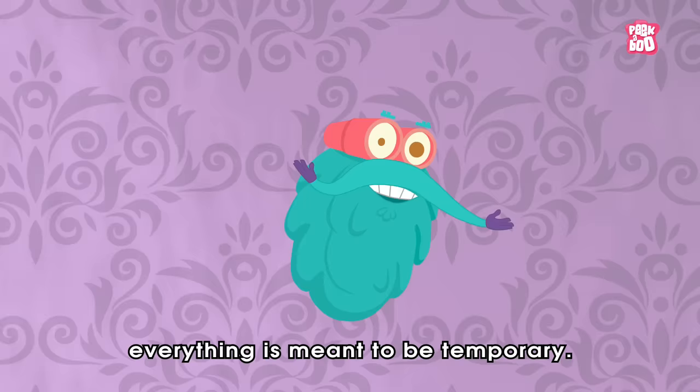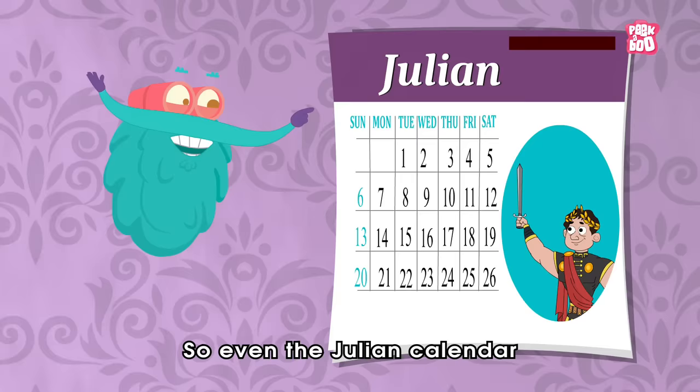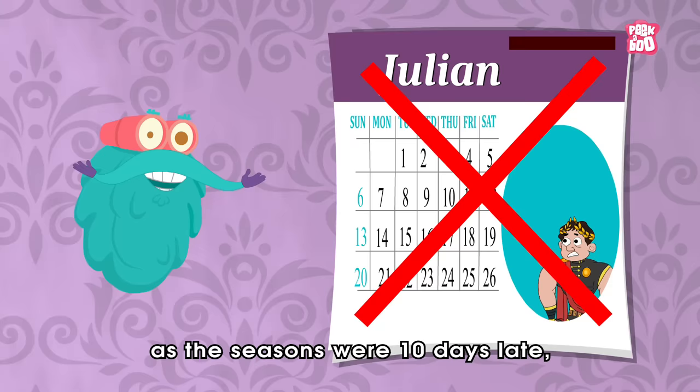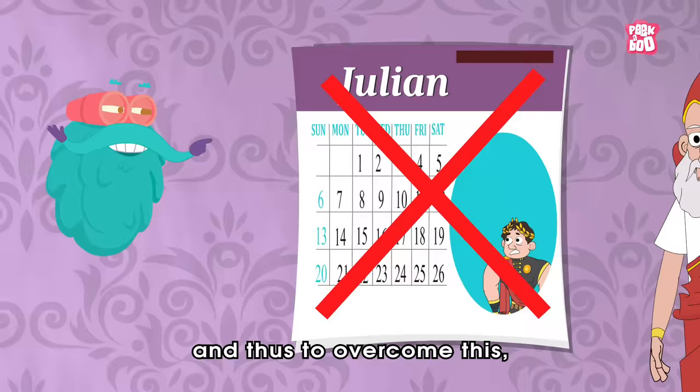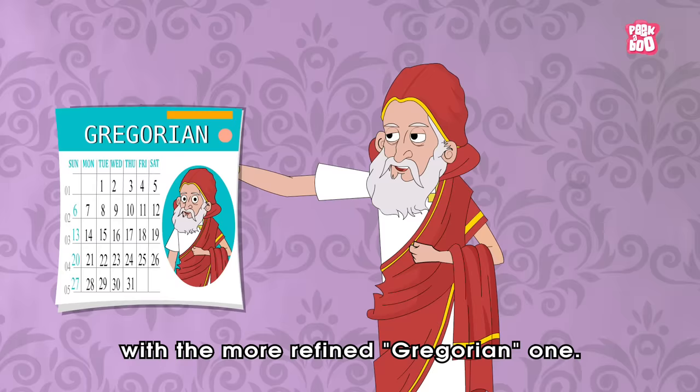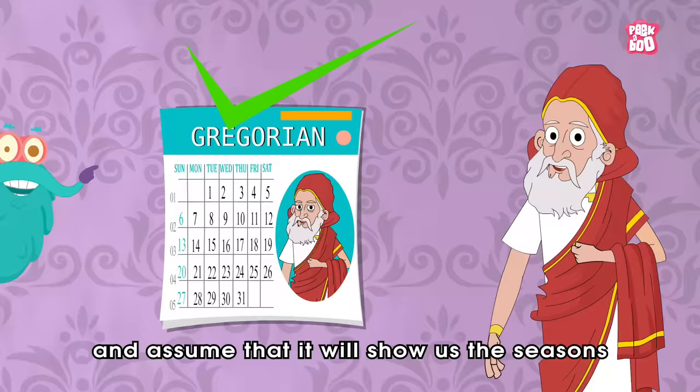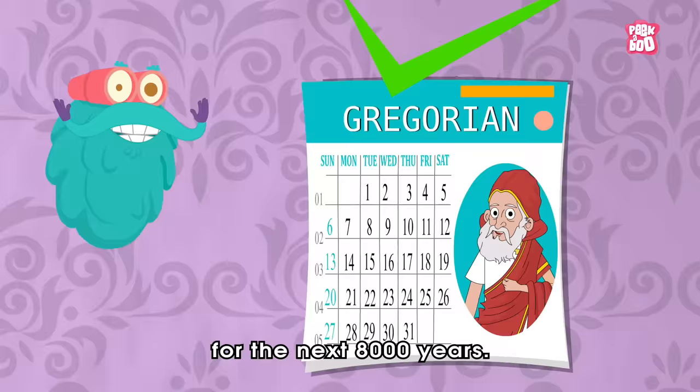However, everything is meant to be temporary. Even the Julian calendar began to fail after 1,500 years, as the seasons were 10 days late. And thus, to overcome this, Pope Gregory XIII replaced the Julian calendar with the more refined Gregorian one, which we still follow today and which is assumed to show the seasons and festival cycle correctly for the next 8,000 years.